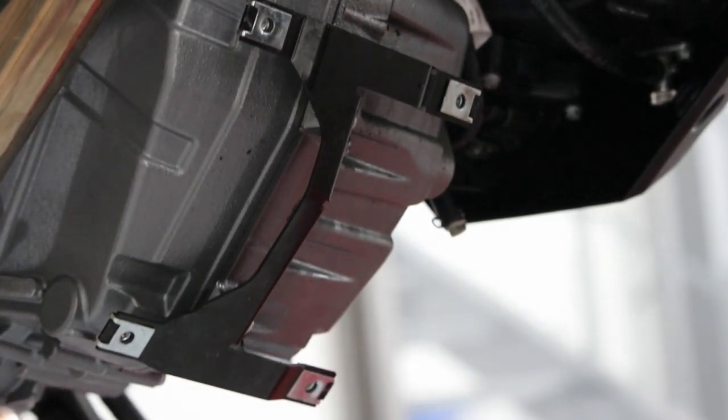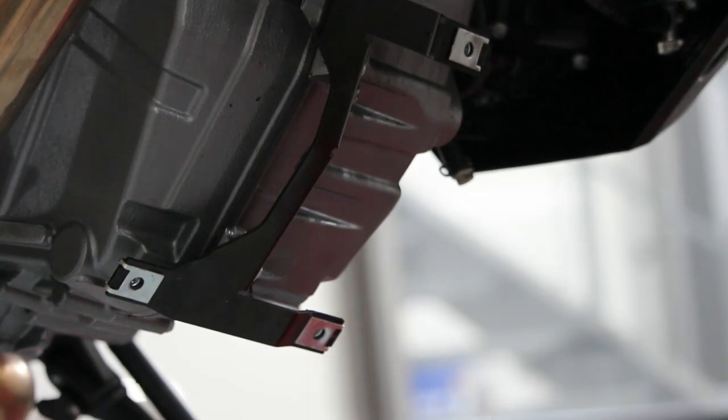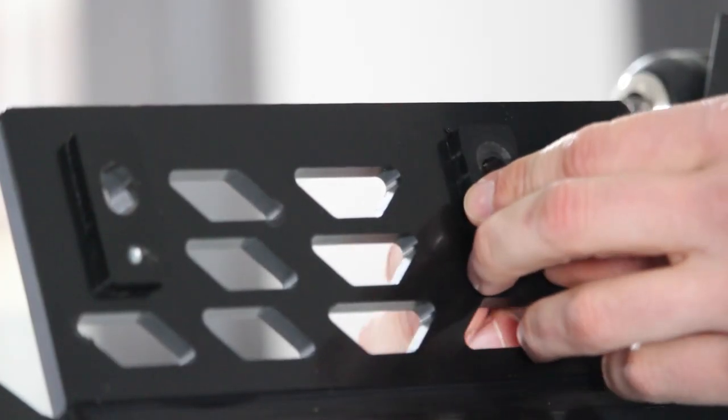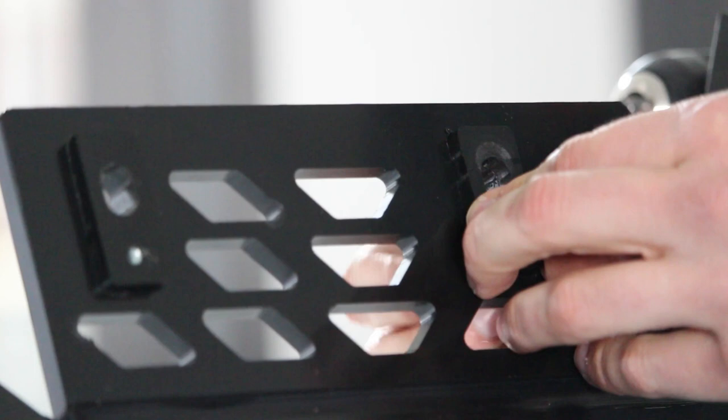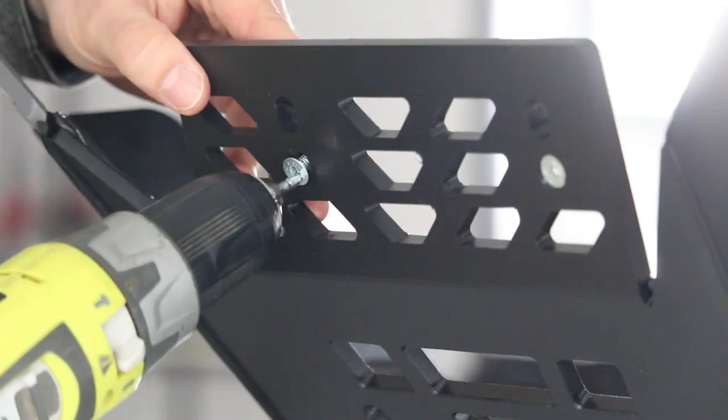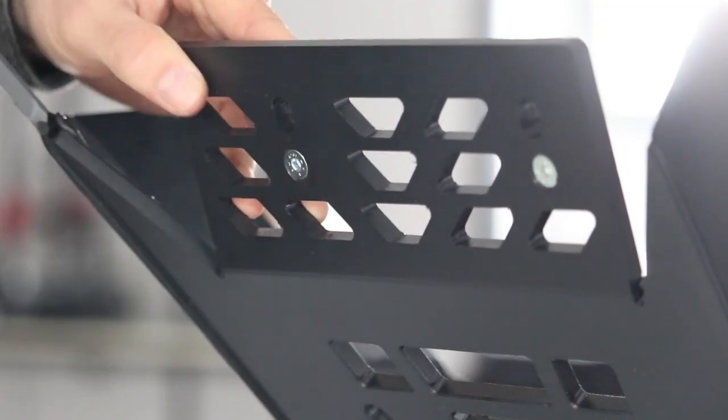For the front fixation, we kept the OEM support and added four 6mm thick plastic spacers to fix on the skid plate first, then it will come against the support to fix on the OEM points.